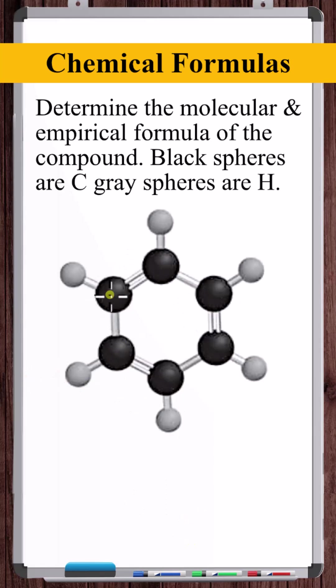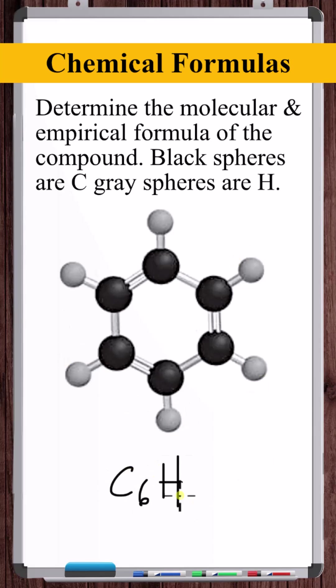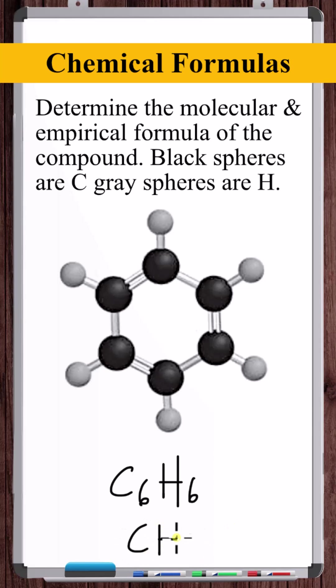Here we've got one, two, three, four, five, six carbons and one, two, three, four, five, six hydrogens, giving a molecular formula of C6H6. The empirical formula is one part carbon to one part hydrogen, so the empirical formula is CH.